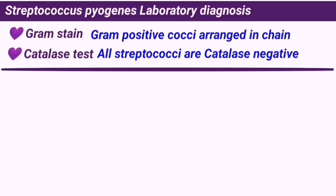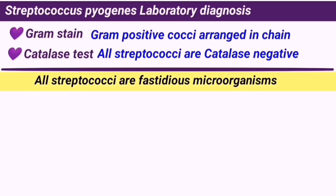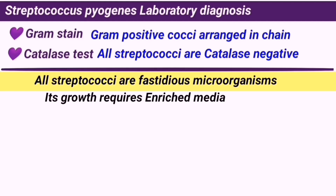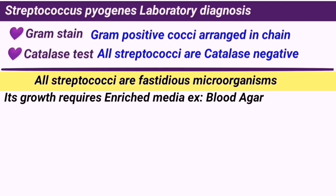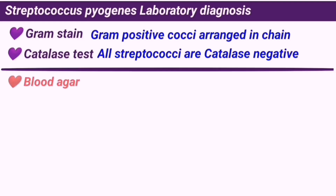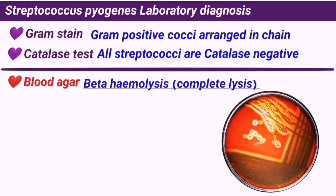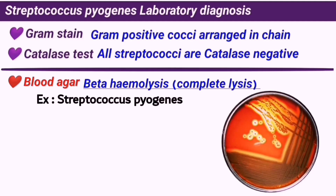All streptococci share the fastidious microorganism characteristic, which means that they can't grow on simple media. They require some supplementary elements in enriched media to show clear growth. Blood agar is the best media for isolating this species. Growth of S. pyogenes can be confirmed by beta-hemolysis on blood agar because it can break down red blood cells completely, resulting in the appearance of clear zones around grown colonies.